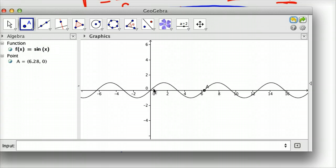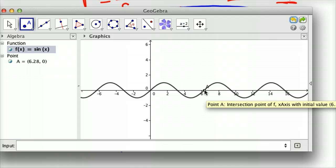So 6.28 is 2 pi. So notice the 1 cycle, if I trace that out, starts at 0, goes up to 1. At pi, we're at 0 again. Then we go to negative 1, and then we complete the cycle at 6.28, which is 2 pi.